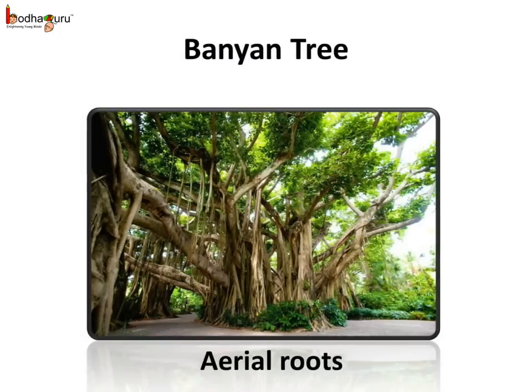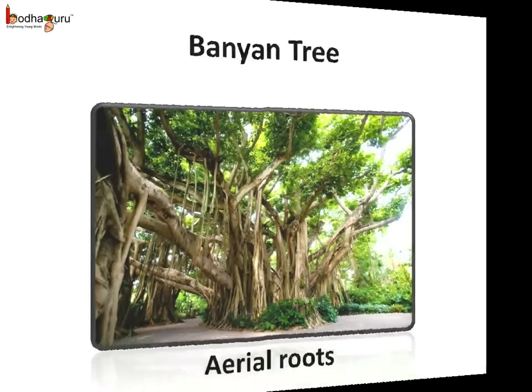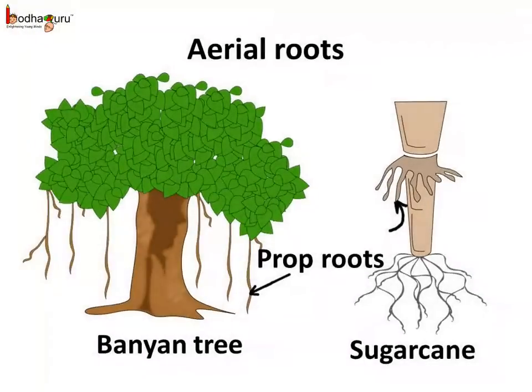In some plants, a few roots come out of parts of the stem to perform a special function. These are called aerial roots. Aerial roots grow above the ground. Look here — these are the roots coming down from the branches of the banyan tree. As these roots reach the ground, they also give support to the huge banyan tree. These are called prop roots. Prop roots can also be seen in bamboo, sugarcane, etc.